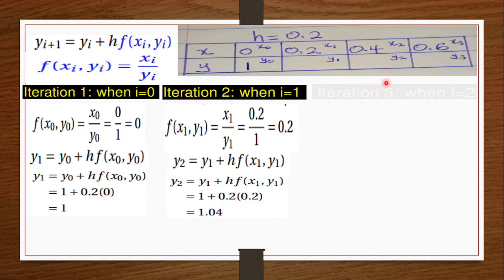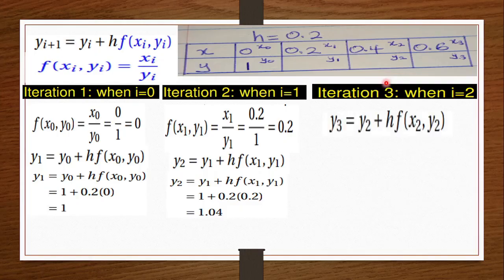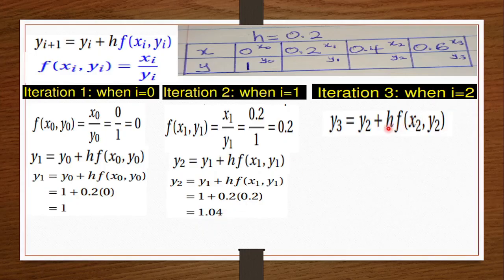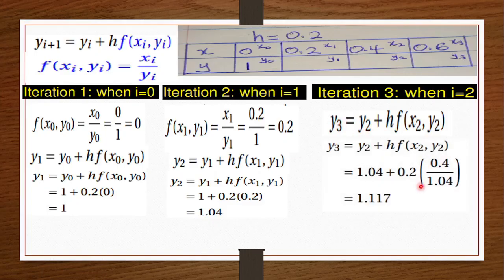For the third iteration, i=2. The formula becomes y3 = y2 + h·f(x2, y2). We compute f(x2, y2) = x2/y2. x2 is 0.4 and y2 is 1.04, so f = 0.4/1.04. We then compute y3 = 1.04 + 0.2×(0.4/1.04), which gives us our y3 value. So we have found all nodal points: y₀, y1, y2, and y3.